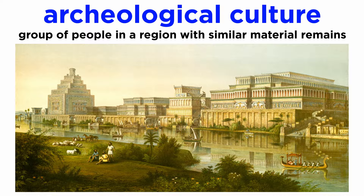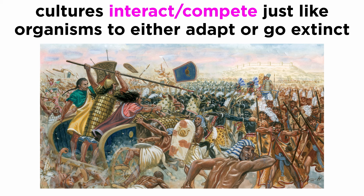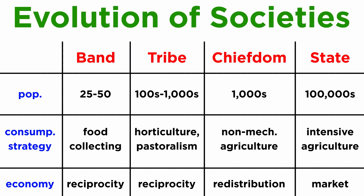Material remains include similar building practices, pottery, and burials. To a cultural history theorist, these cultures interacted and competed in a similar way as organisms, either adapting or going extinct. From this idea came the concept of the evolution of societies from a band, to a tribe, to a chiefdom, and lastly a state, each society growing in complexity and fitness.